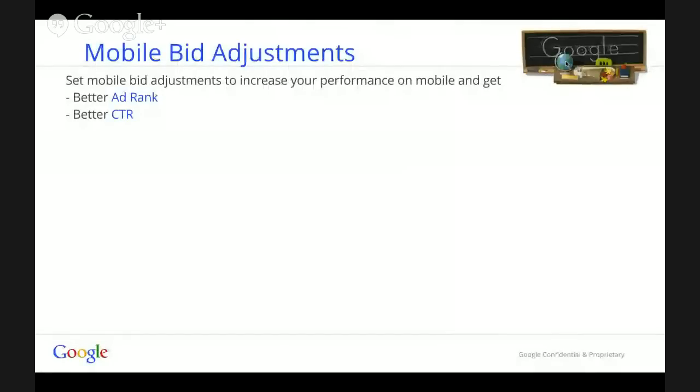Mobile bid adjustment is a feature that helps you increase your performance on mobile by getting a better ad rank and a better click-through rate. Setting it up is really, really easy. Just go inside the settings of the campaign you want to apply bid adjustment to and go inside the devices section.